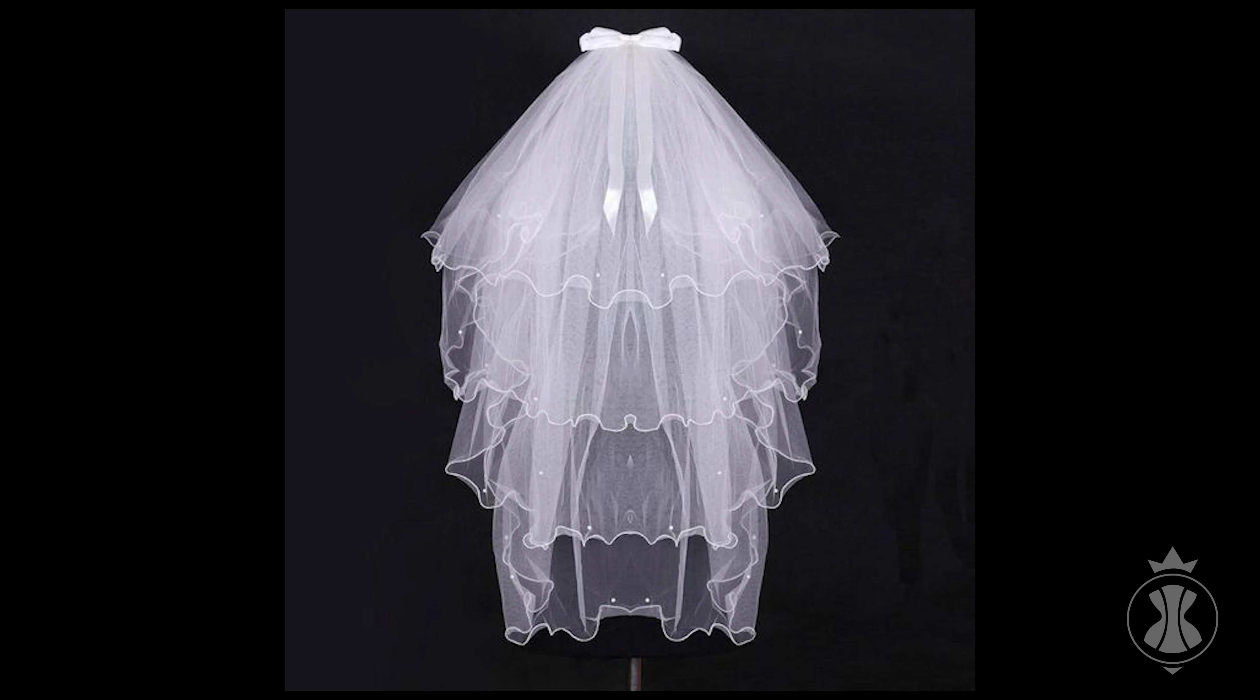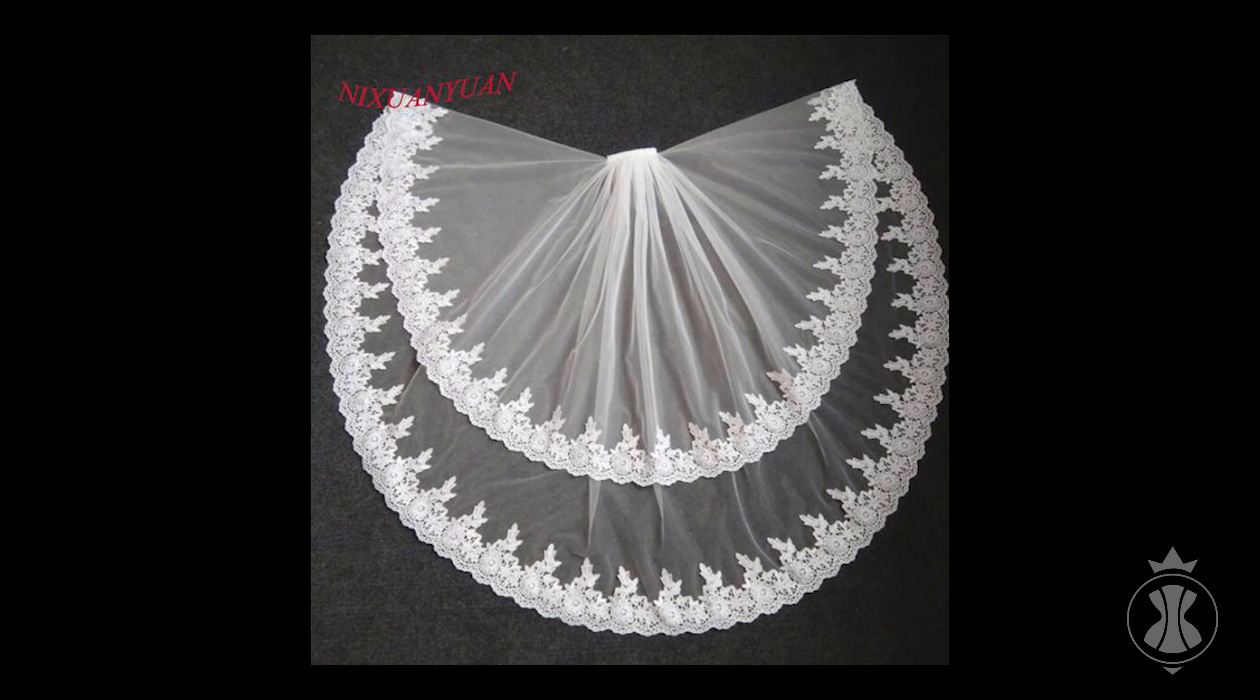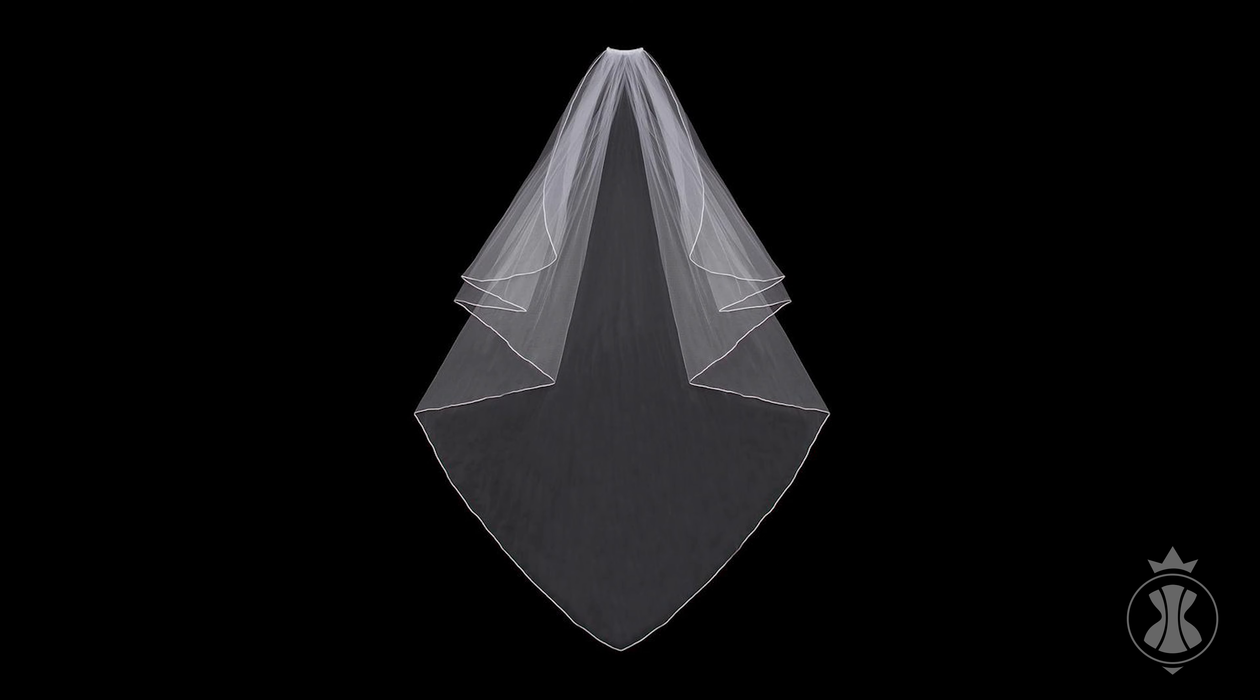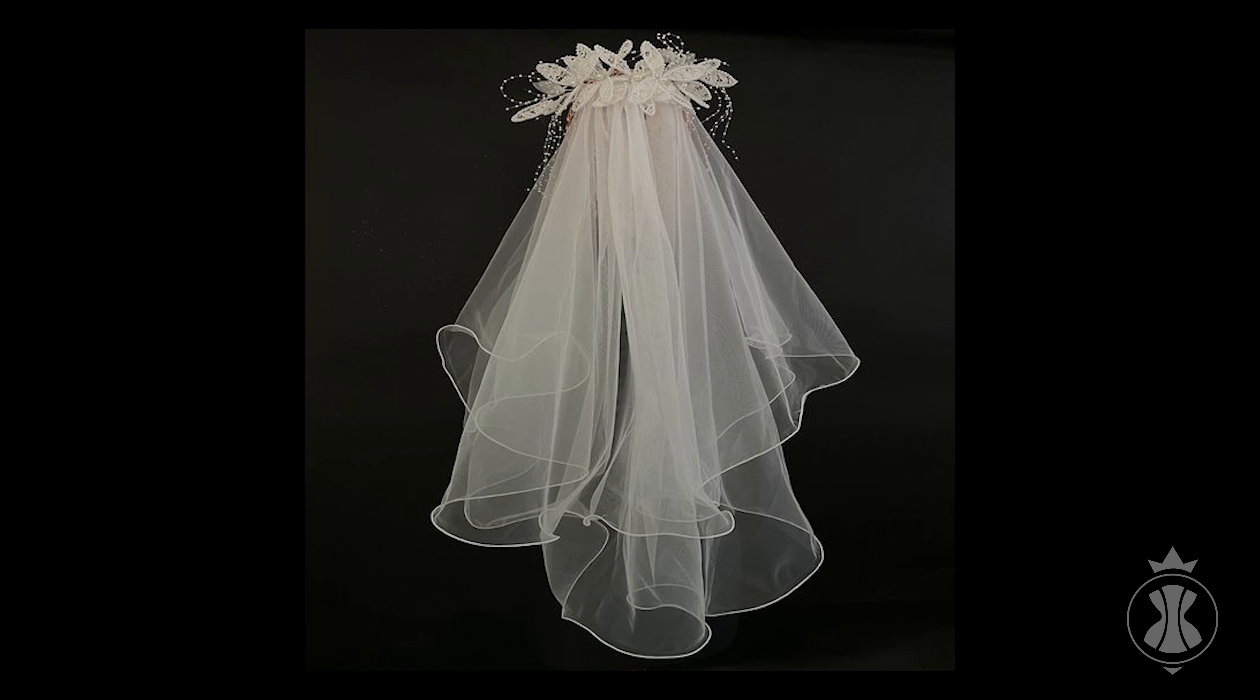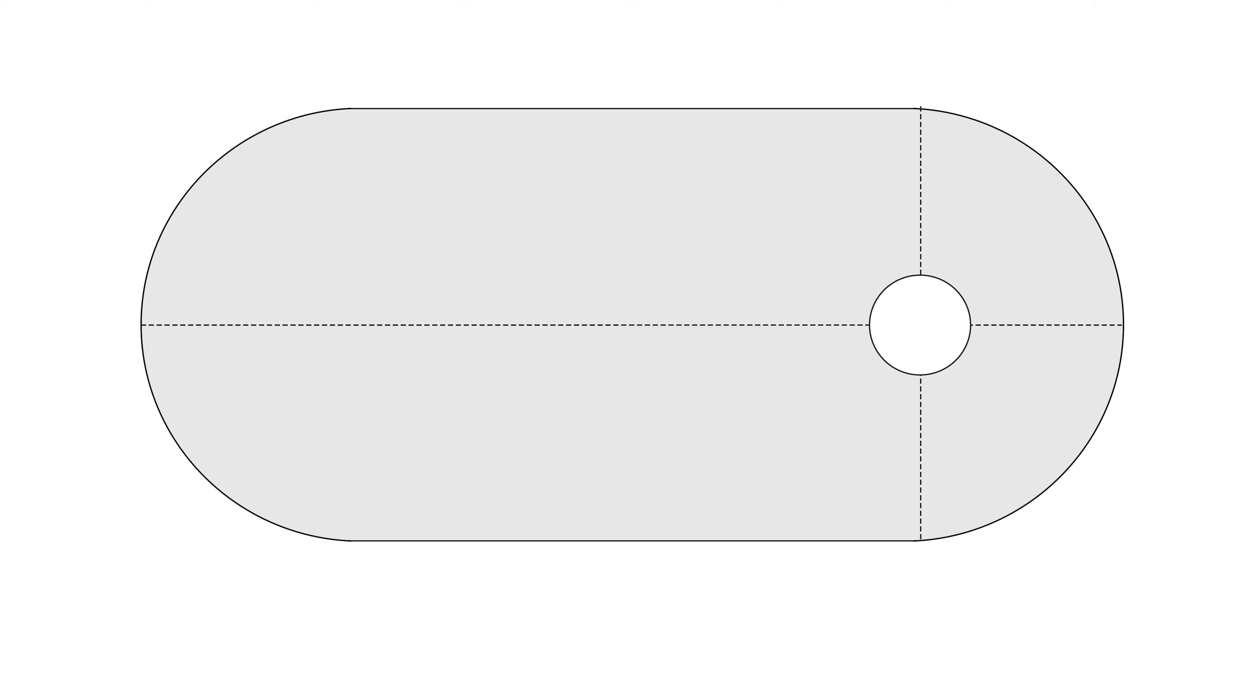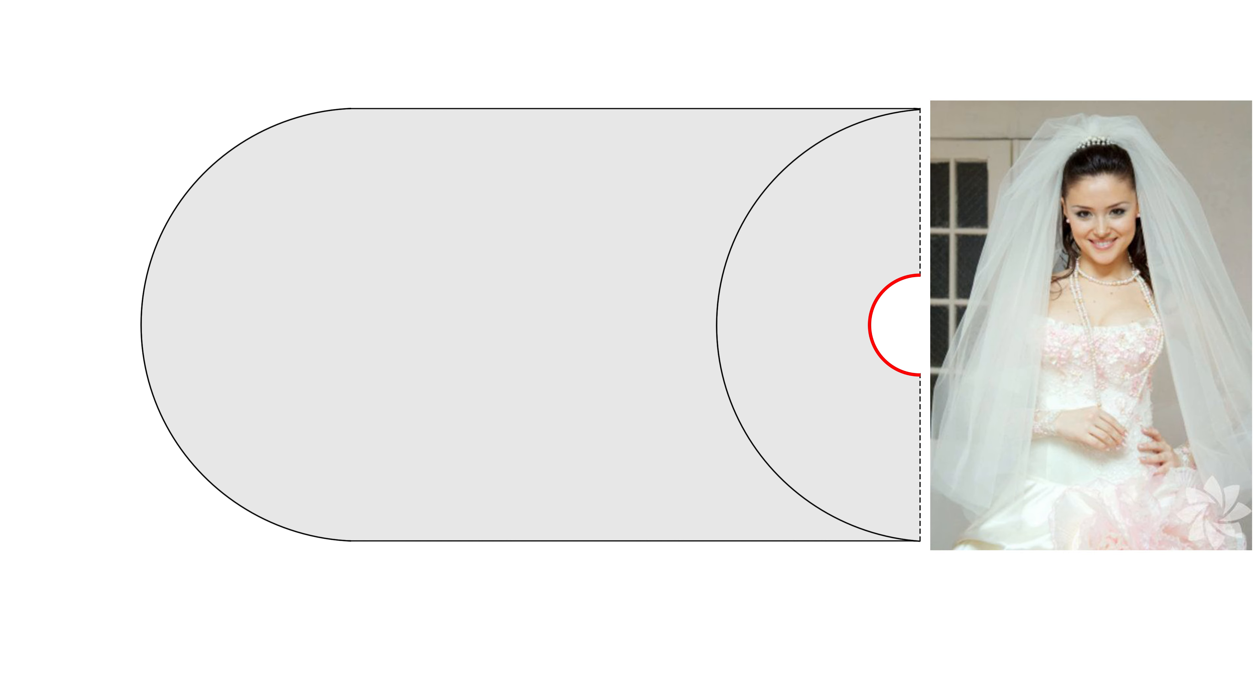There are numerous styles and variations of veils. Let me share a few techniques that can alter the classic look of the veil. By cutting a circle at the attachment point of the comb, you can lengthen the side edges of the front layer that fall on the shoulders, creating a fuller veil.